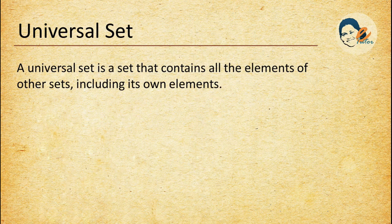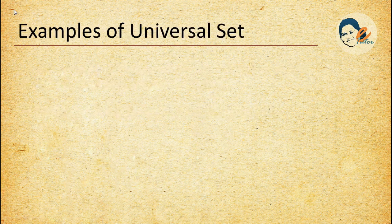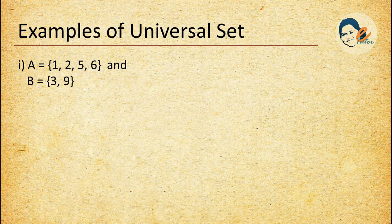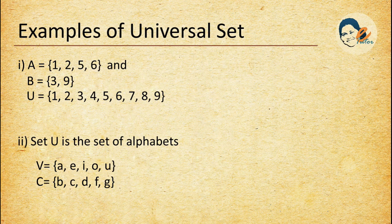Universal set: a universal set is a set that contains all the elements of other sets including its own elements. It is usually denoted by the symbol capital U. Example: if set A has elements {1, 2, 5, 6} and set B has elements {3, 9}, then U is the universal set which contains all the elements of A and B. Another example: set U is the set of alphabets, set V is the set of vowels, and set C is a set of 5 consonants. The elements of V and C are already included in U, so U is the universal set.